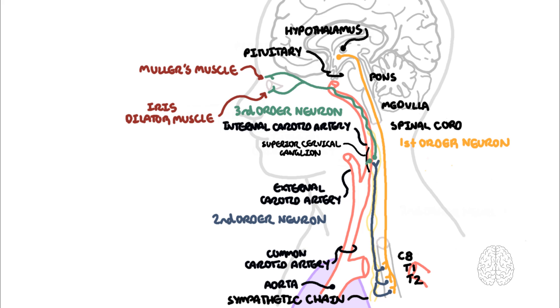There are fibers which branch from the superior cervical ganglion travelling along the external carotid artery, and its branches innervate the sweat glands and are responsible for facial sweating and vasodilation.